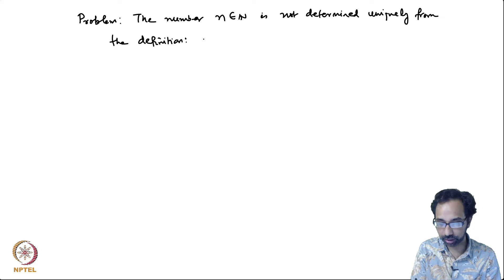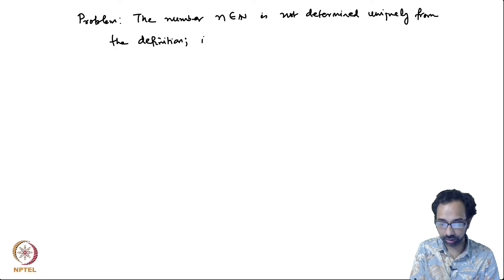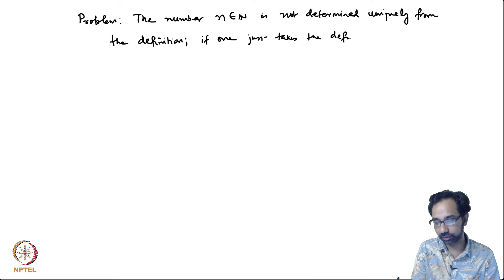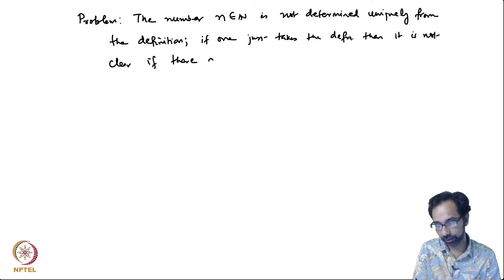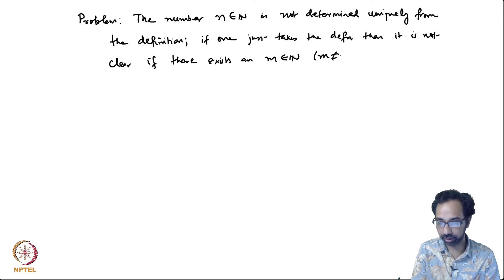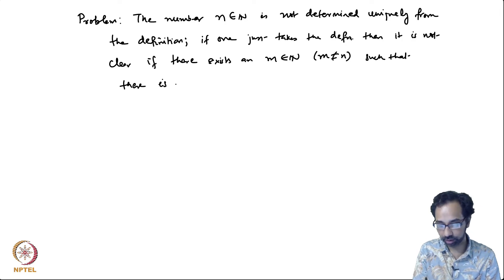What this means is that, just taking the definition alone, it is not clear whether there exists a natural number m, different from n, such that there is also a bijection from A to {1, 2, ..., m}. In other words, n is not uniquely determined.